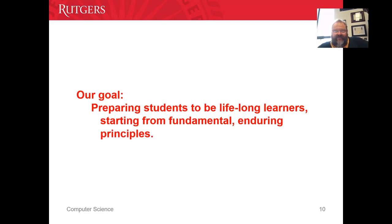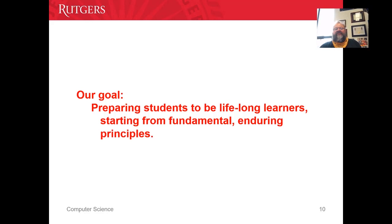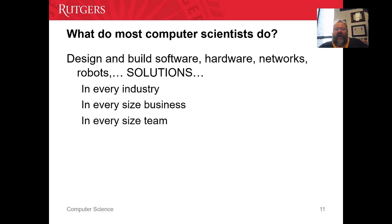It should have been called information science, or applied discrete mathematics — but then nobody would be here. So that's what computer science is about: learning to be a problem solver, and then later you offload those solutions onto a computer.